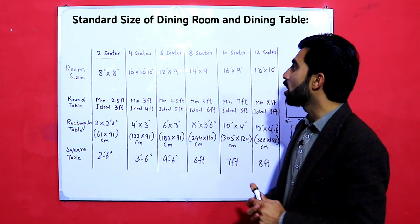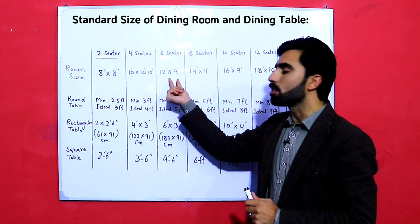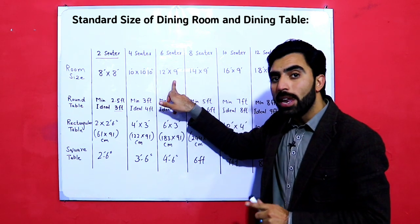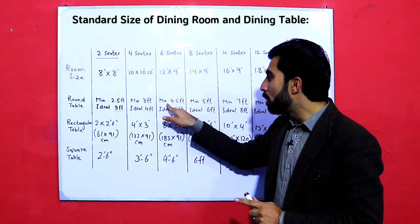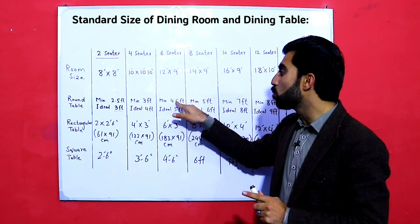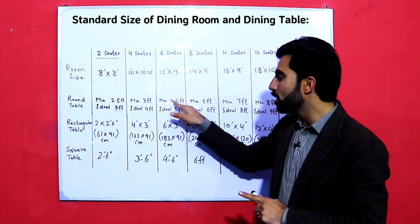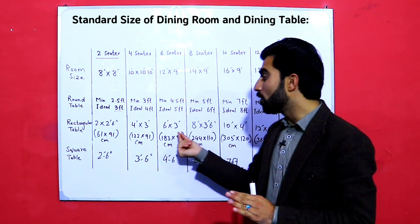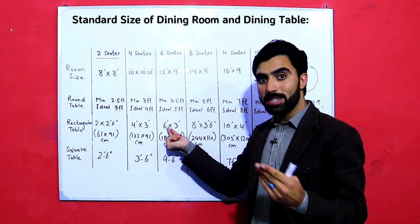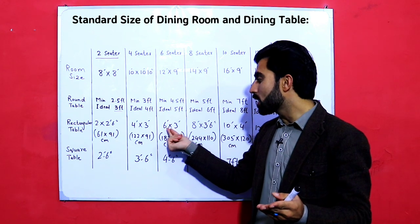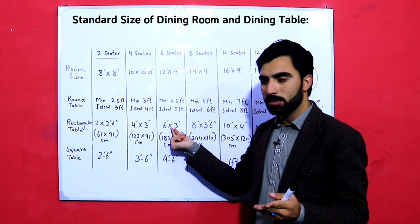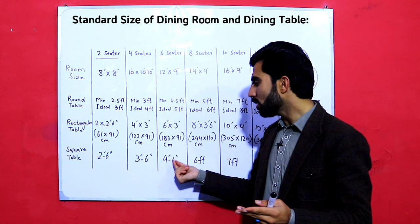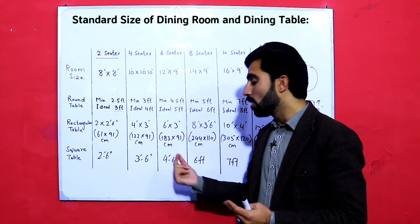For six sitters, the dining room size should be twelve by nine feet. The minimum round table should be four point five feet, or four feet six inches, and the ideal is five feet. For a rectangular dining table, the size is six by three feet, or 183 by 91 centimeters. For a square table, it should be four point five feet, or four feet six inches.